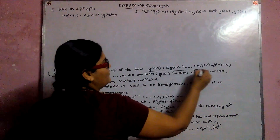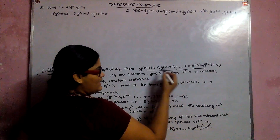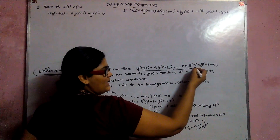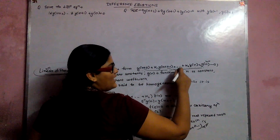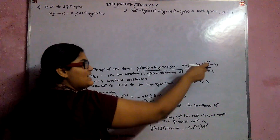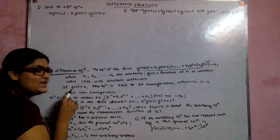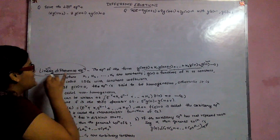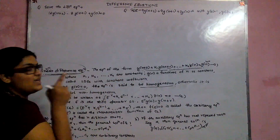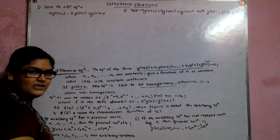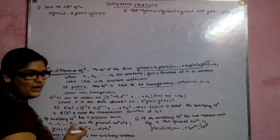Let us take an example of this type of equation: Yn+r + K1·Yn+r-1 + ... + Kr = GN, where K1, K2, K3, and Kr are constants, whereas GN is a function of N or an arbitrary constant. If GN equals 0, the linear difference equation is said to be homogeneous. If GN is not 0, then it is a non-homogeneous equation. We have to solve both homogeneous and non-homogeneous equations one by one.